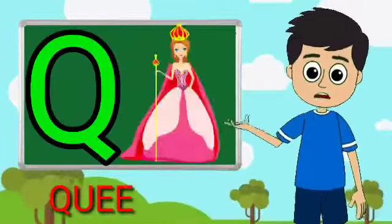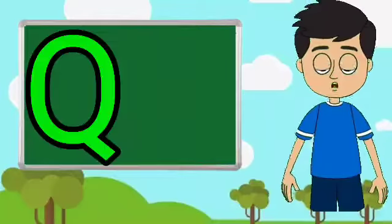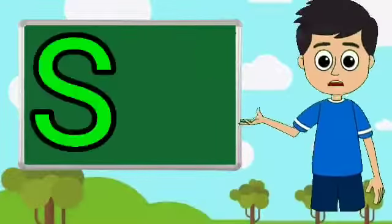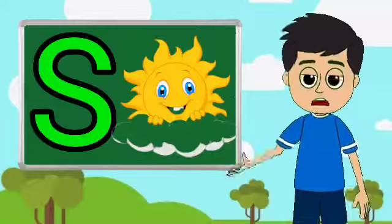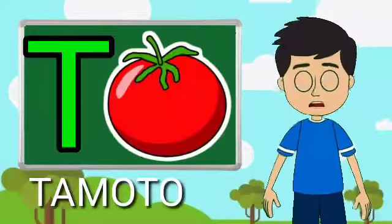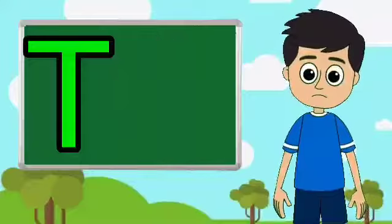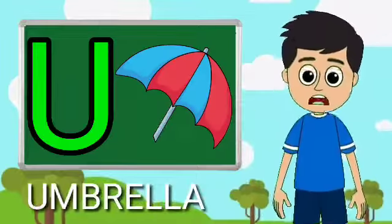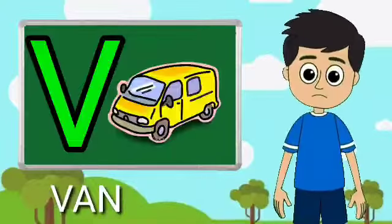Q for queen, R for rat, S for sun, T for tomato, U for umbrella, V for van.